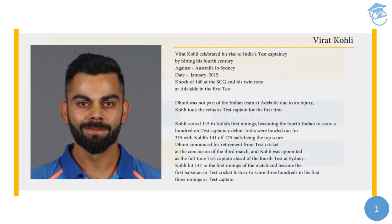From 242 for two, India were bowled out for 315, with Kohli's 141 off 175 balls being the top score. This was Kohli's second turn as captain and it was hailed by Australian commentators as the finest last-day fourth-innings performance they had ever seen in Australia.